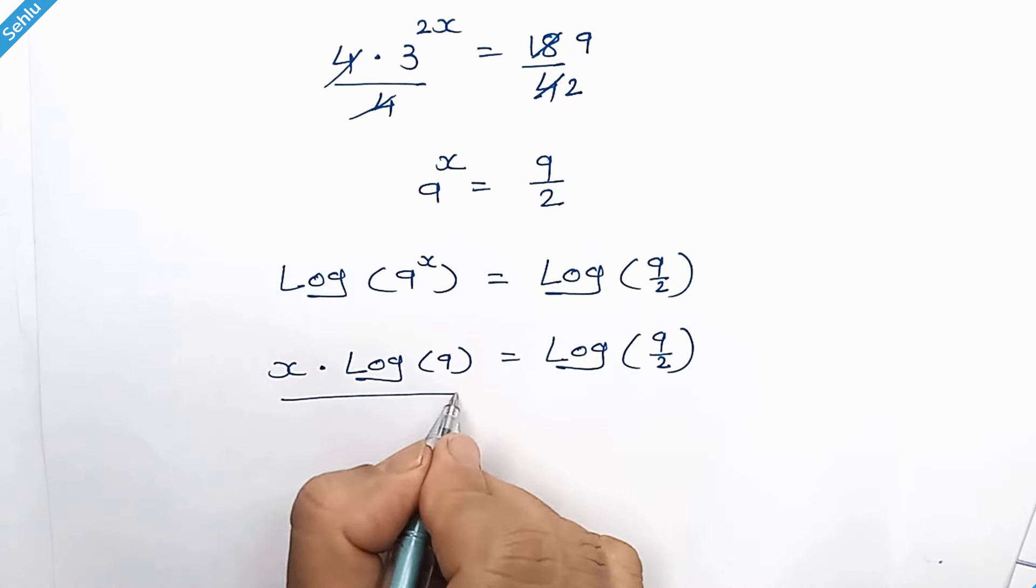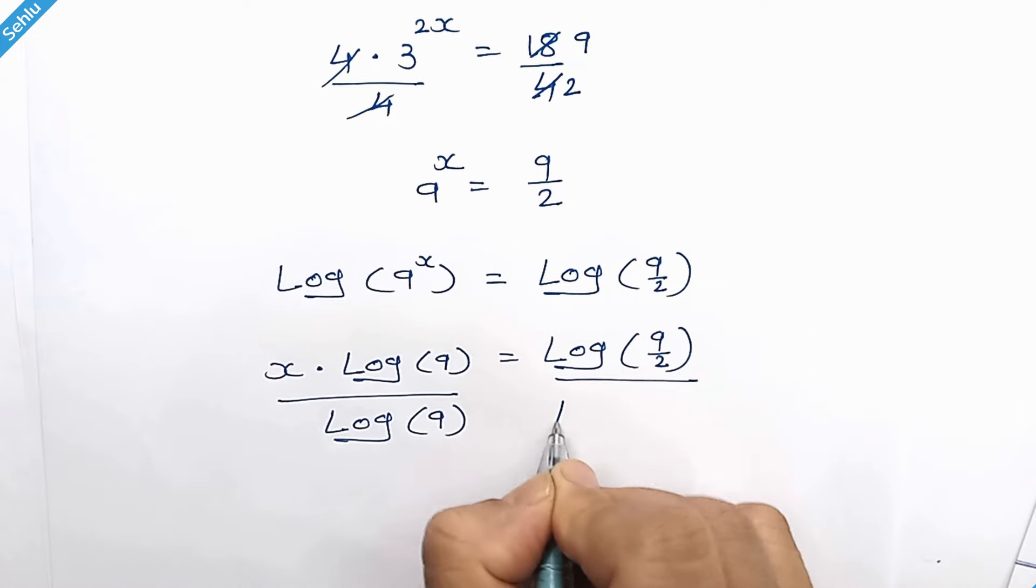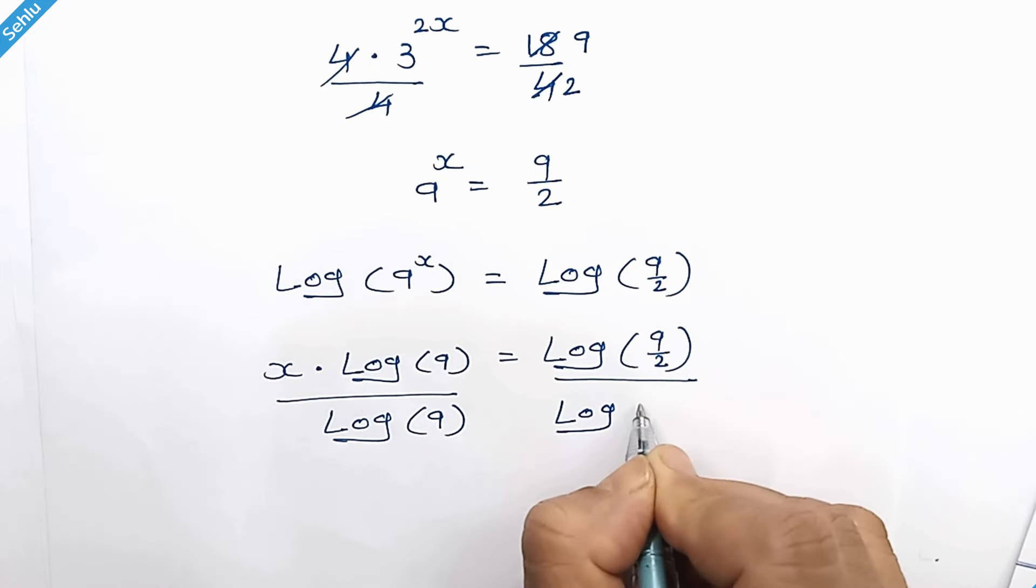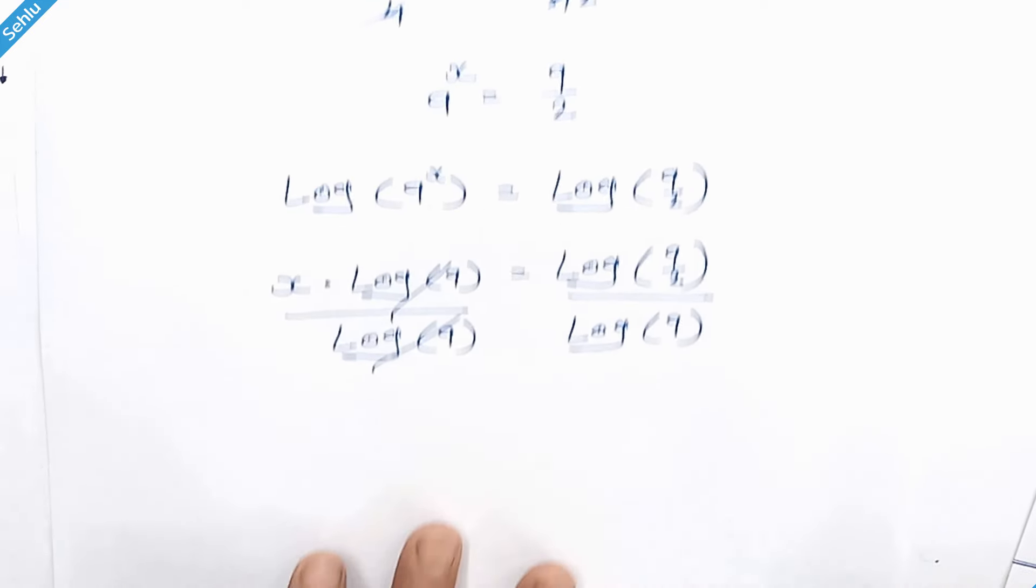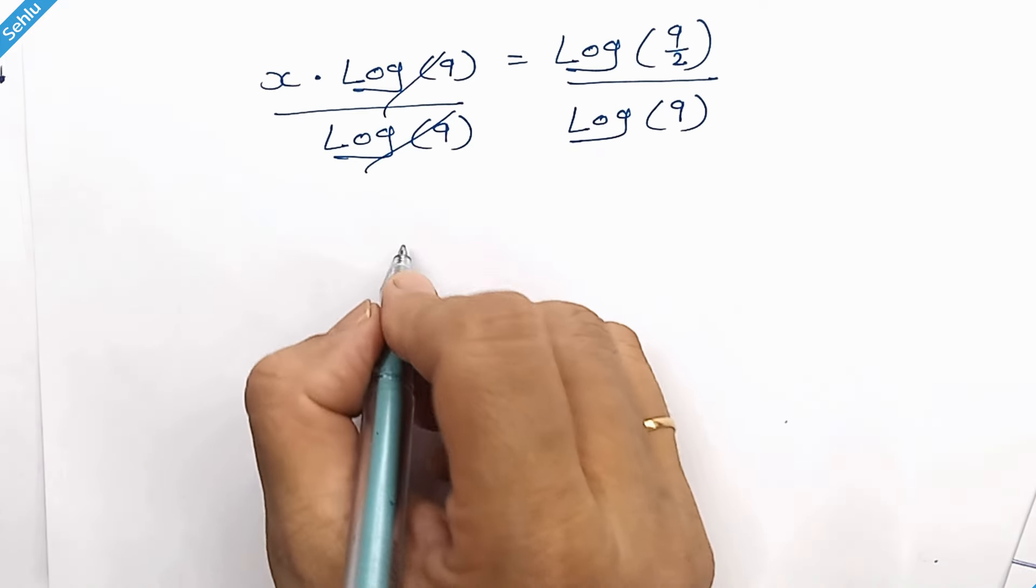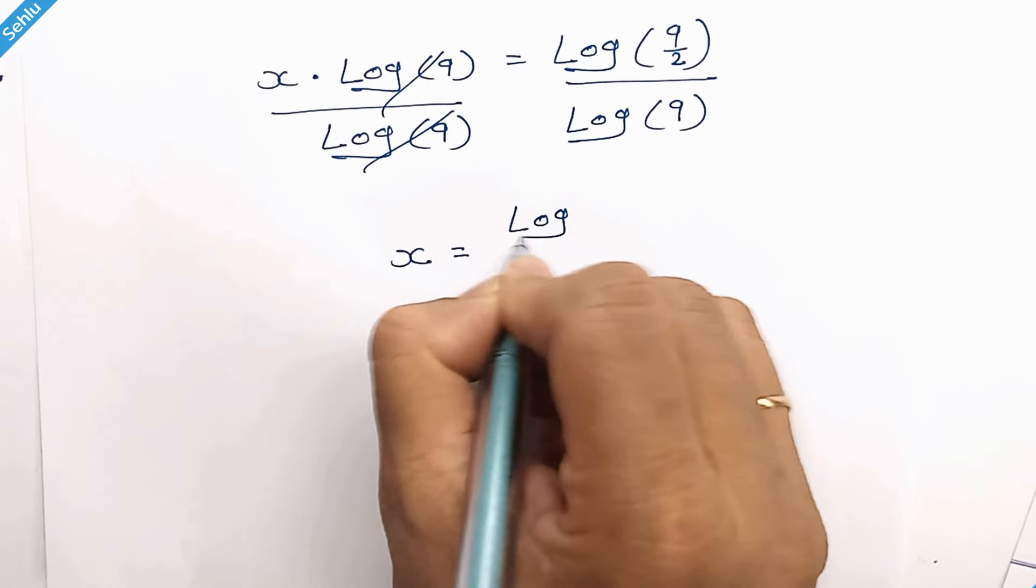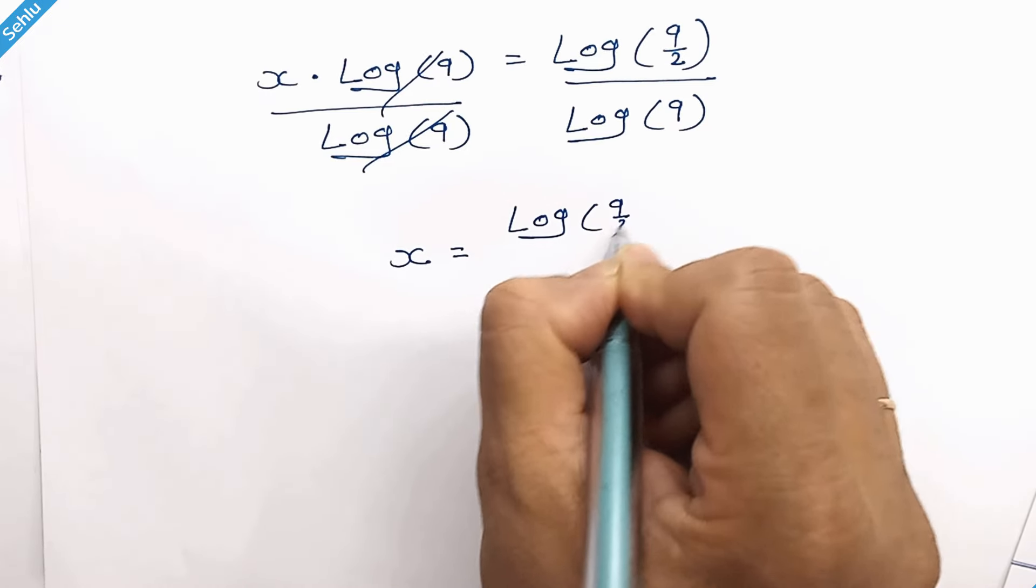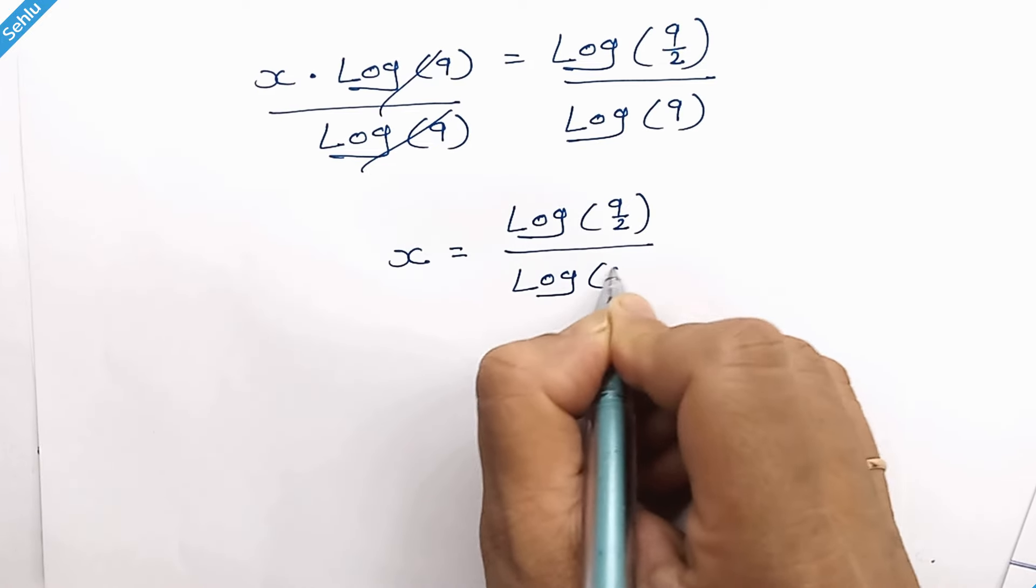Now we will divide by log of 9 on both sides. So we have x equals log of 9 over 2, divided by log of 9.